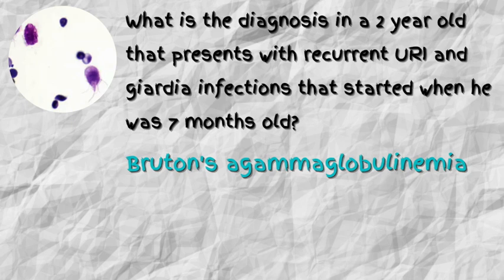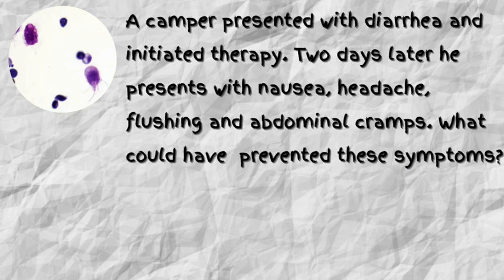USMLE Step 1, Step 2 CK, and definitely Step 3. A camper presented with diarrhea and initiated therapy. Two days later, he presents with nausea, headaches, flushing, and abdominal cramps. What could have prevented these symptoms?